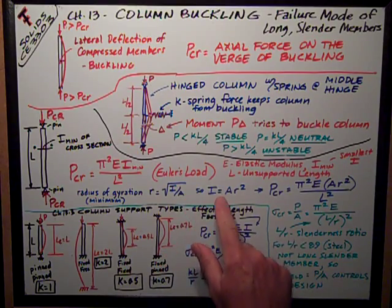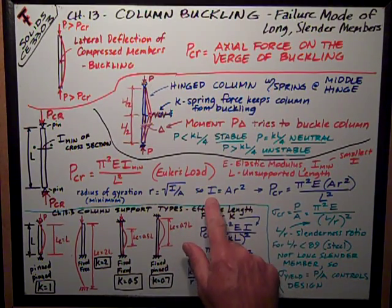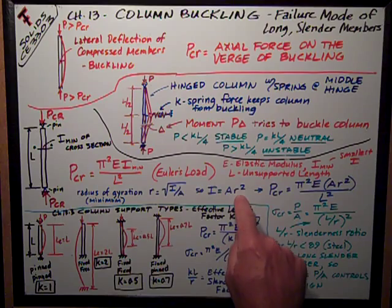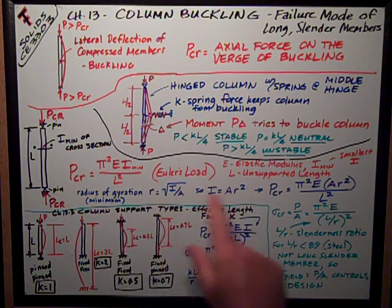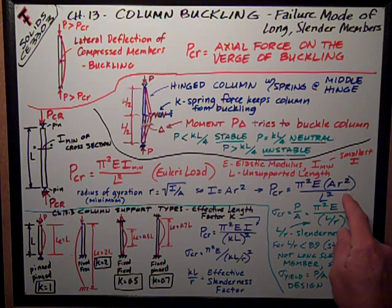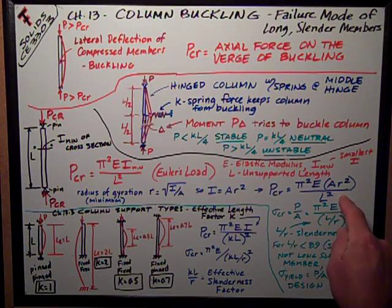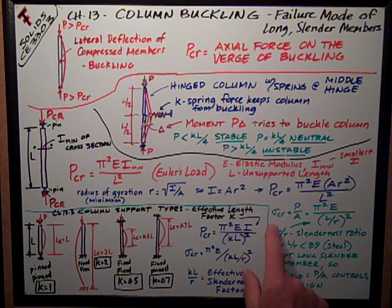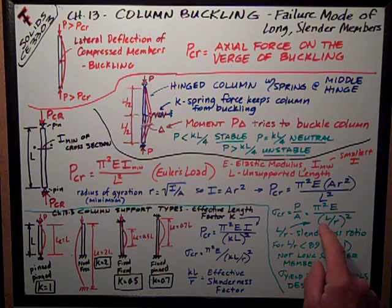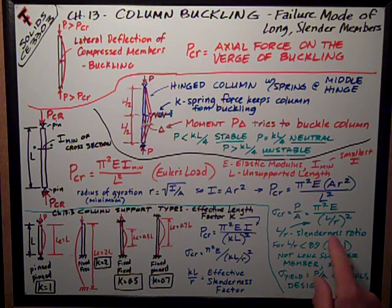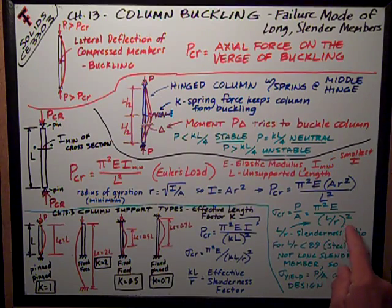So we rearrange that: the moment of inertia equals the area times the radius of gyration squared. Plugging that into Euler's load formula gives pi squared times E times A times r squared over L squared. We can further rearrange that to get a critical stress — which is P over A, the axial stress — and that equals pi squared times E over the quantity L over r, squared.